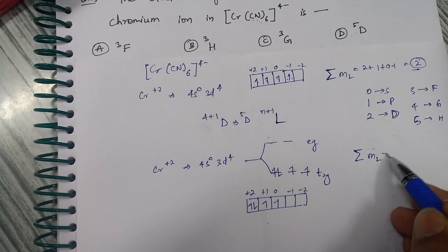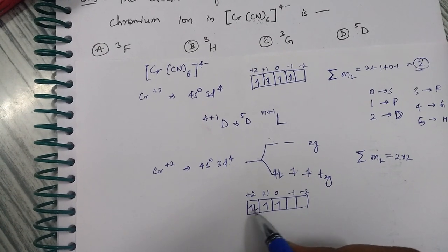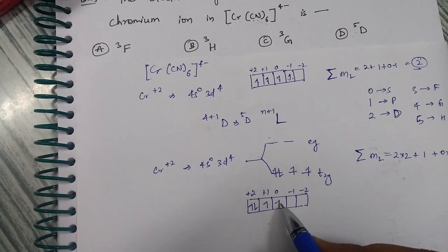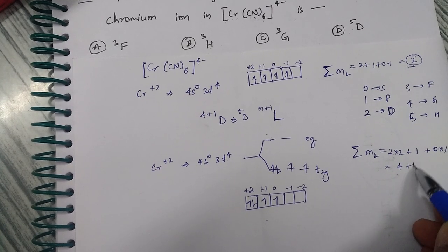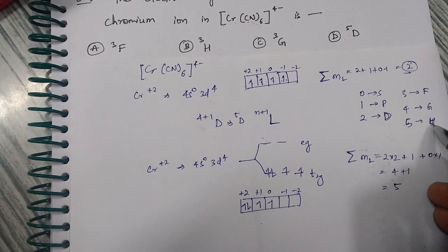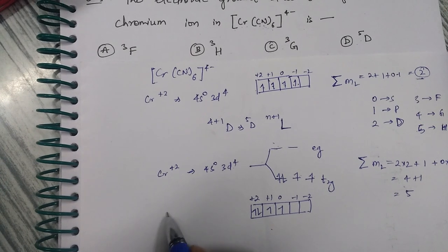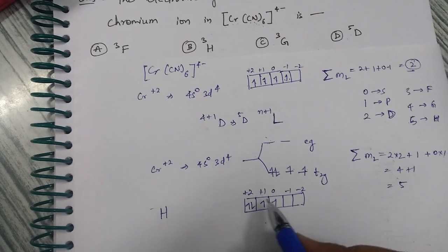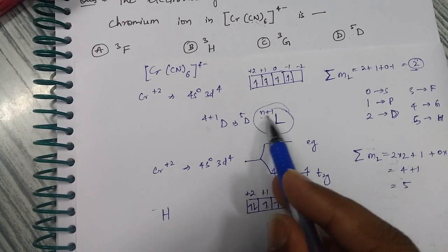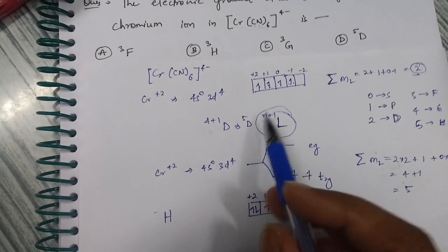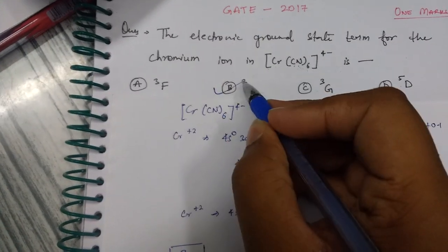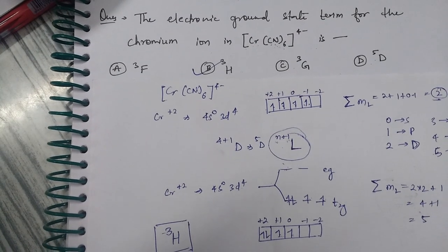Calculating ΣmL: the orbital with two electrons (mL=+2) contributes 2×2=4; the orbital with one electron (mL=+1) contributes 1; the orbital with one electron (mL=0) contributes 0. So ΣmL = 4+1+0 = 5, and for L=5 the term letter is H. There are only 2 unpaired electrons, so spin multiplicity = 2+1 = 3. The correct ground state term is therefore ³H.